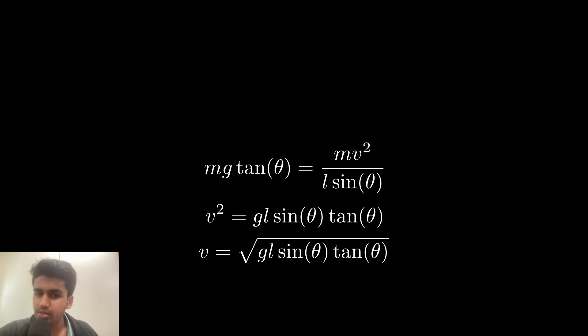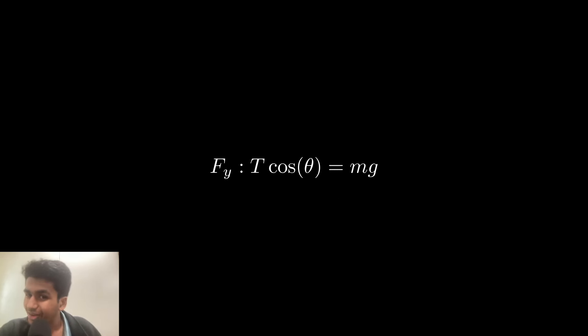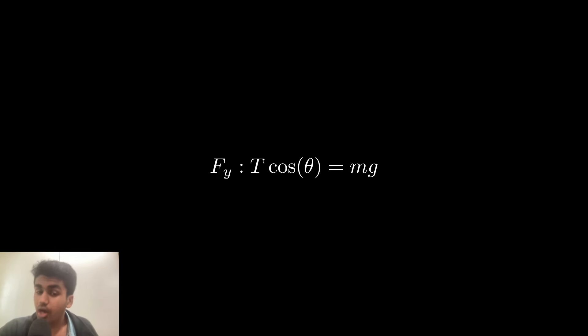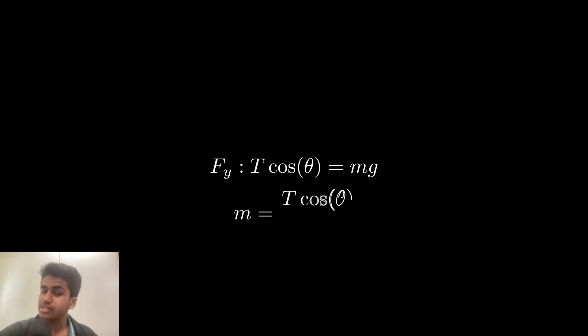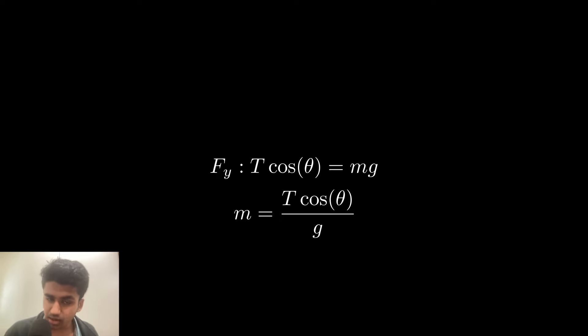To find the mass of the object, remember that the vertical component of tension, T cosine theta, balanced out the gravitational force. That means T cosine theta equals mg. Dividing both sides by g, we find that the mass is T cosine theta over g.